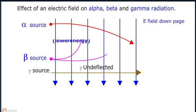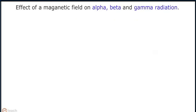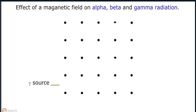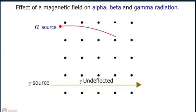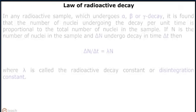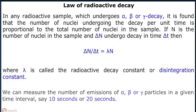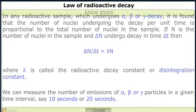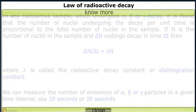Law of Radioactive Decay: In any radioactive sample which undergoes alpha, beta, or gamma decay, it is found that the number of nuclei undergoing their decay per unit time is proportional to the total number of nuclei in the sample. If N is the number of nuclei in the sample and ΔN undergo decay in time Δt, then ΔN/Δt = λN, where λ is called the radioactive decay constant or disintegration constant.